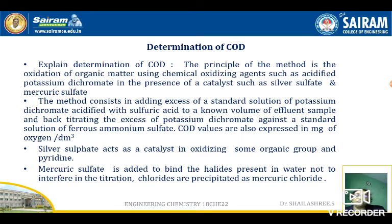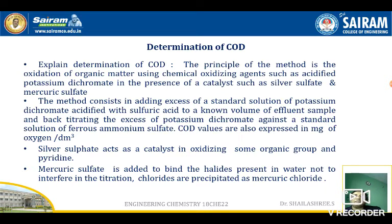COD values are expressed in milligrams of oxygen per dm³. We take 25 mL of the wastewater sample and add 25 mL of acidified potassium dichromate — we don't know exactly how much is required, but we add 25 mL in excess. We also add H₂SO₄ containing catalysts: silver sulfate and mercuric sulfate. Silver sulfate acts as a catalyst in oxidizing certain organic compounds and pyridine, which are otherwise difficult to oxidize.